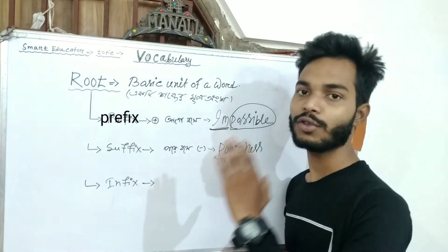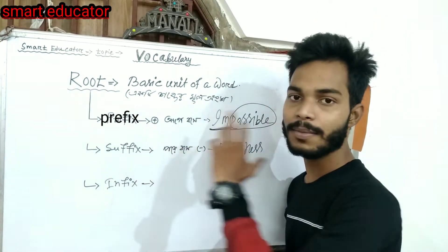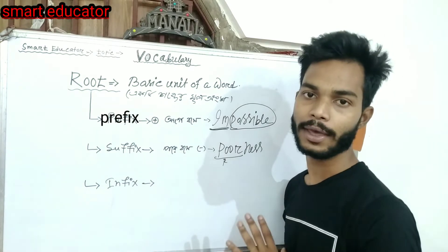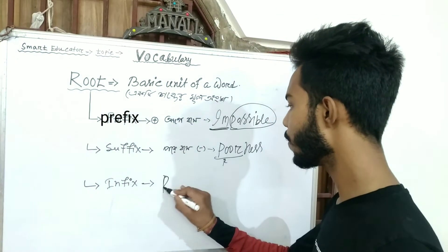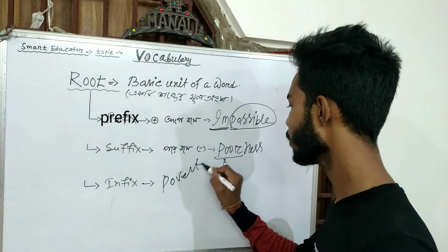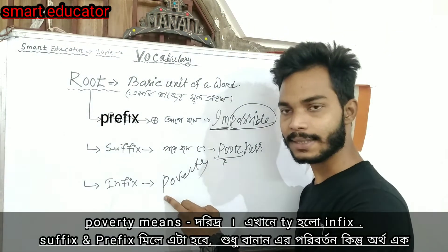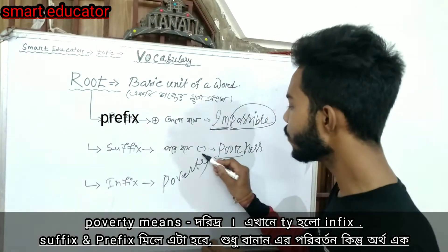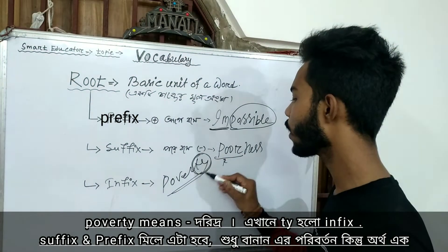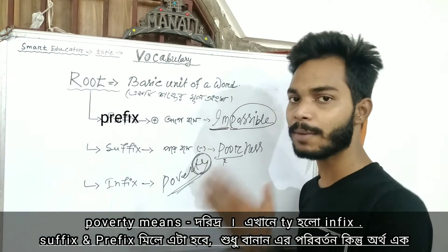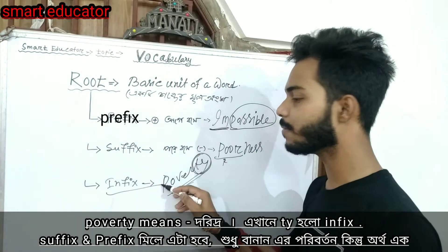What is infix? Infix is what comes between prefix and suffix. For example, take 'poverty.' Poverty is derived from 'poor.' Adding 'ty' changes the form — the meaning changes. This transformation is called infix.